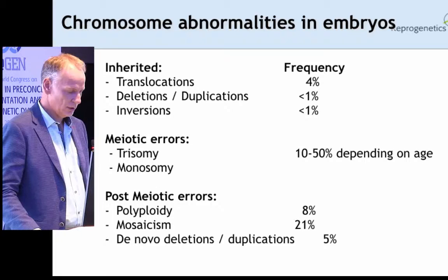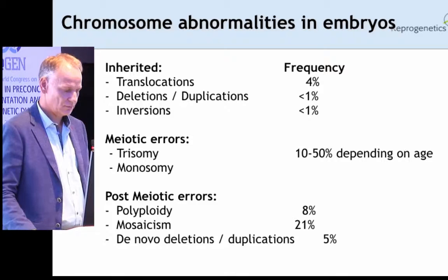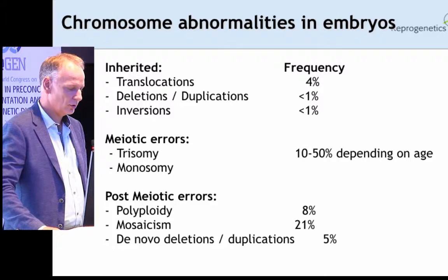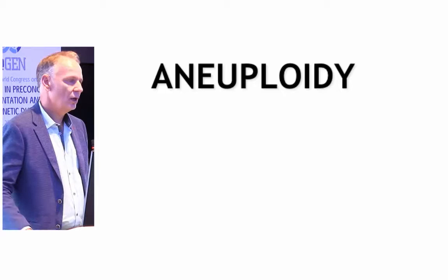And some that we weren't testing before, which are post-meiotic abnormalities, are also quite common: polyploidies, mosaicism, segmental deletions, and duplications. I will focus most of the talk on meiotic errors and post-meiotic errors.